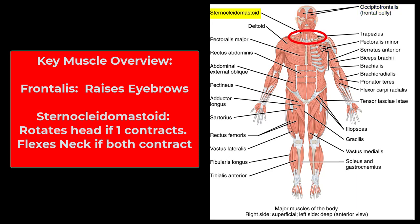Next we have the sternocleidomastoid — a perfect example of why terminology matters. Sterno means sternum, cleido means clavicle, and mastoid is the mastoid process of the temporal bone. If both sides contract, it flexes the neck. If only one contracts — say the right — it rotates the head to the left.